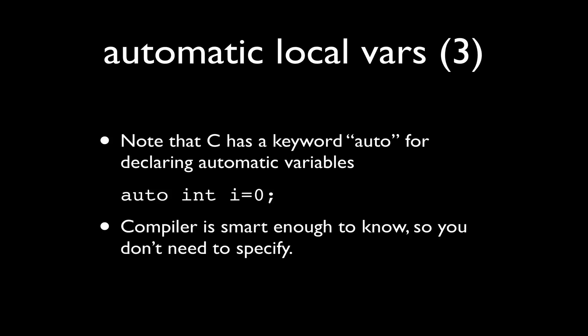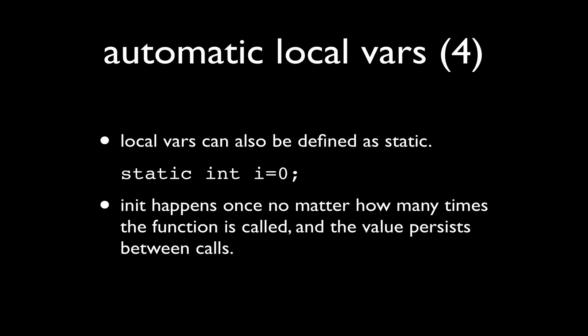Now note that C has a keyword auto for declaring automatic variables. So we can say something like you see on the slide, auto int i equals zero. However, the compiler is smart enough to know when we define an int in a function or any type of variable in a function that it's going to be automatic and allocated on the stack. So we really don't need to use that keyword.